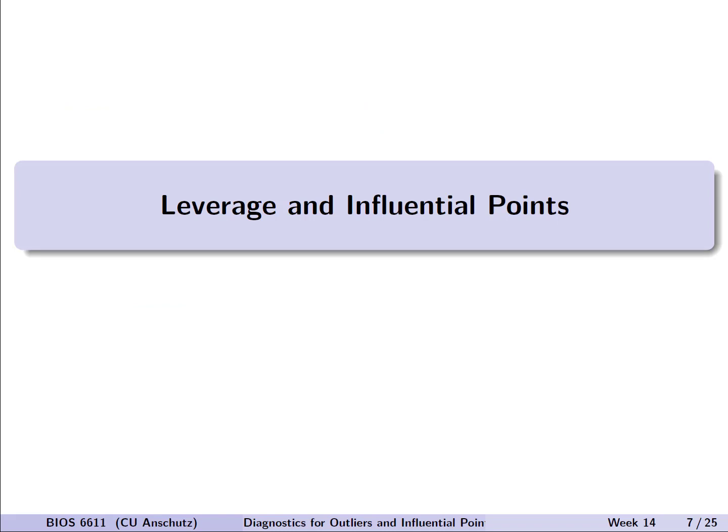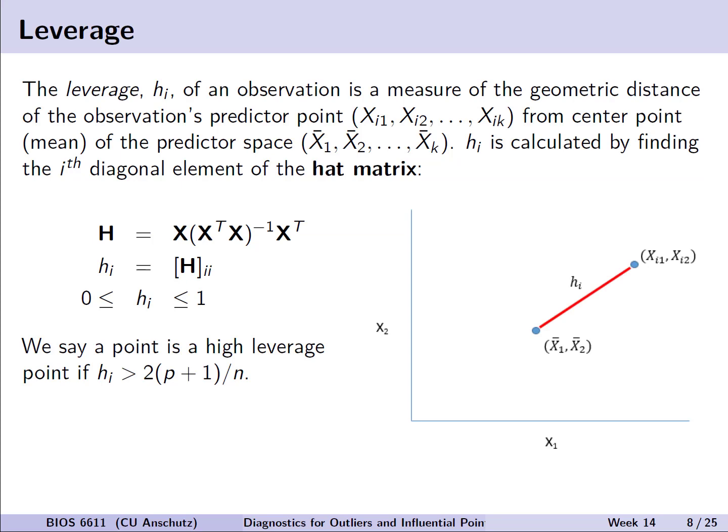Let's discuss the issue of leverage and influential points in a model. Leverage actually is a measure, which we're going to denote here as h sub i, of an observation in the geometric space of our model. It's the distance of the observation's prediction point, x1, x2, and so on, of that individual from the center point or mean of all of those variables. h_i is calculated generally by finding the i-th diagonal element of the hat matrix, X(X'X)^(-1)X'. Now, mathematically, we can denote that h sub i is really equal to the i-th and i-th element of that hat matrix, that diagonal term. A property of this leverage point is that it will range between 0 and up to 1. And for any given sample, we try to set some threshold to identify if it seems like a point might have high leverage.